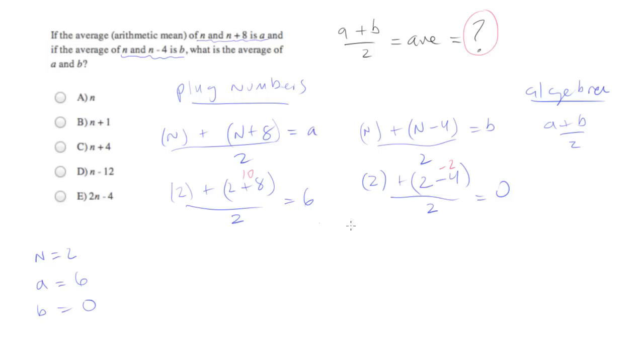And at this point, what we can do is go ahead and plug back in to what we were hoping to find, which is a plus b over 2, which turns out to be equal to 3. So we're hunting for the answer choice which equals 3. And now we can plug in what we've been given. So n is 2.